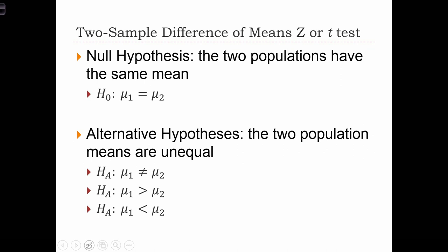The null hypothesis for a two-sample difference of means test is that the two populations have the same mean, mu1 equals mu2. Keep in mind that this is the same thing as saying that the difference between the two means, mu1 minus mu2, equals 0.